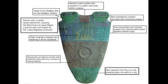What do we see on the front? Starting at the top: Narmer's name written with symbols of a catfish and chisel within a palace. There is a boat. There are foes decapitated and castrated. At the bottom, we see what may represent the king as a bull knocking down the walls of a city. There is a mythical animal with entwined necks defining a recess for mixing makeup. We see a priest wearing a leopard skin following four divine standards. We see King Narmer with a sandal bearer behind him, wearing the red crown of Lower Egypt, a bull tail, and a kilt — the Lower Egyptian costume.